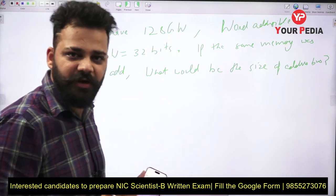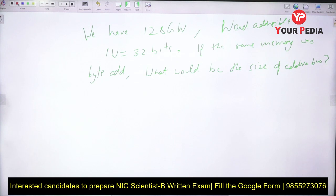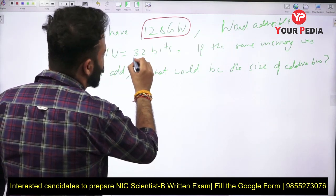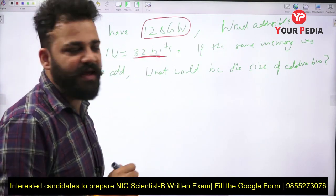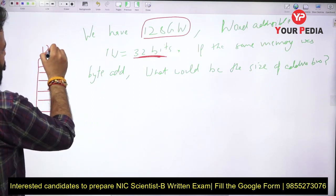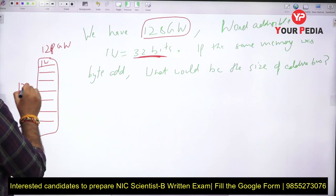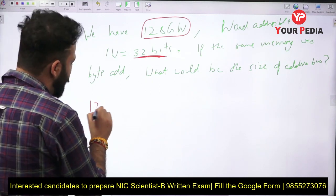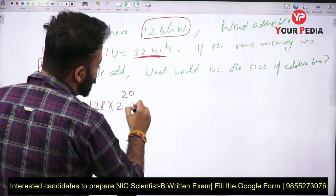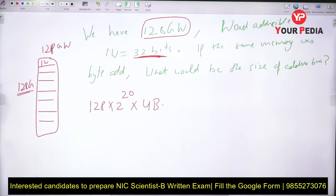We will use the long method to make the concept clear. First, since the memory is word addressable and one word is 32 bits, each cell has 32 bits. If the memory is 128 GW and one cell stores one word, the total number of cells is 128G. Converting: 128G is 2⁷ × 2²⁰ = 2²⁷ cells, and one word equals 32 bits which is 4 bytes.